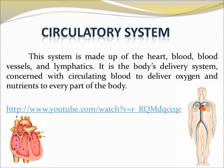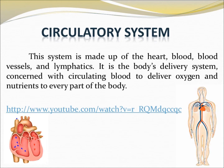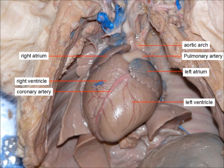Circulatory system. This system is made up of the heart, blood, blood vessels, and lymphatics. It is the body's delivery system, concerned with circulating blood to all parts of the body. You can see the picture of the pig's heart and the parts of the heart are shown here.